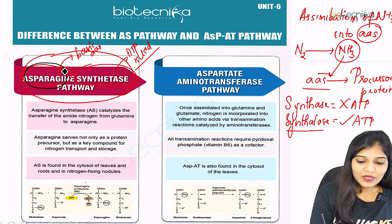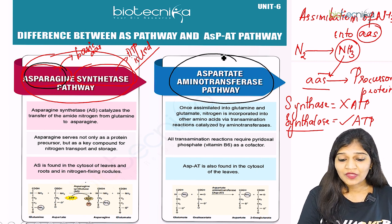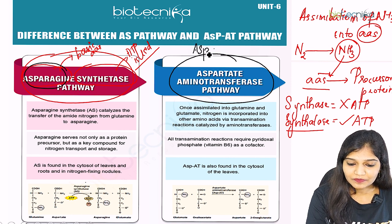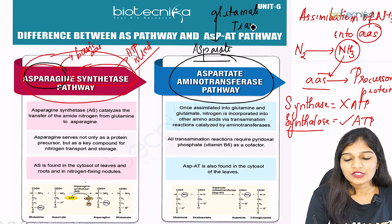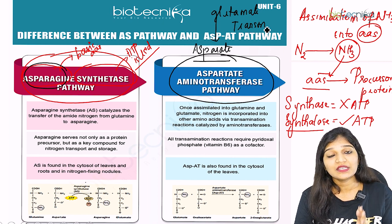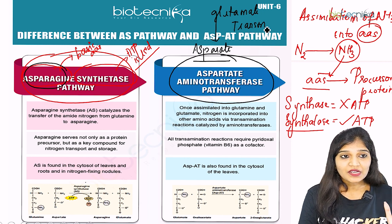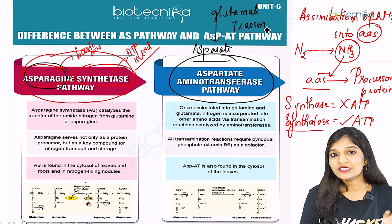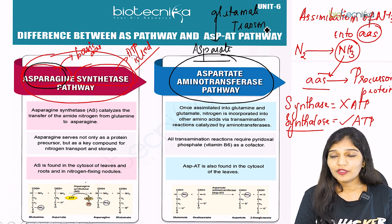Before going further, let's understand the aspartate aminotransferase (ASP-AT) pathway. In this pathway, aspartate is derived from glutamate, meaning we perform a transamination process. The enzyme aspartate aminotransferase is very helpful for this transamination process. First, let's talk about the asparagine synthetase pathway, and then we will understand the aspartate aminotransferase pathway.